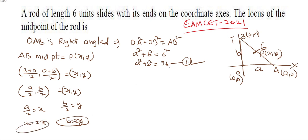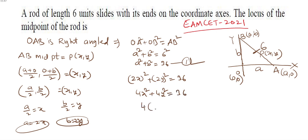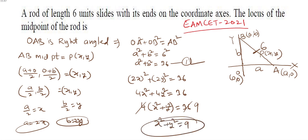Substituting a = 2x and b = 2y into the equation a² + b² = 36: (2x)² + (2y)² = 36, giving 4x² + 4y² = 36. Dividing by 4, x² + y² = 9. This is the locus of the midpoint of the rod.